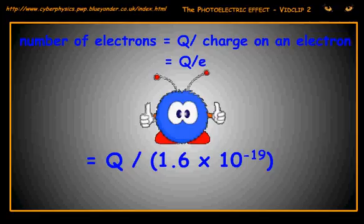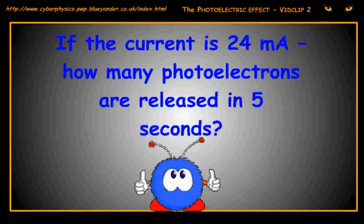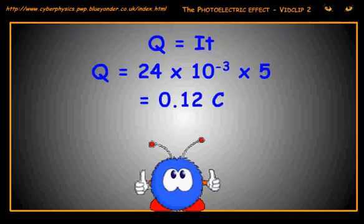Let's do an example question to make sure that you understand this. If the current is 24 milliamps, how many photoelectrons are released in 5 seconds?